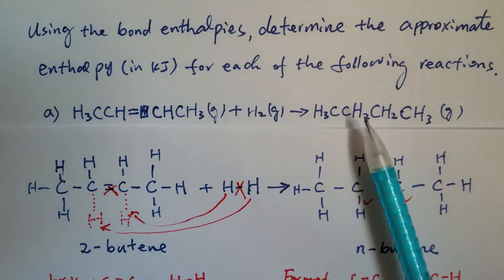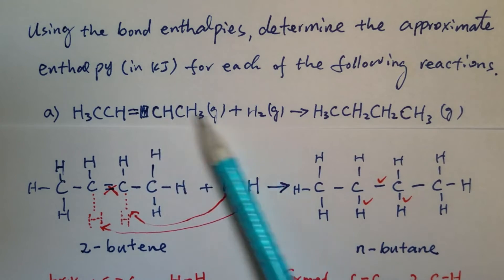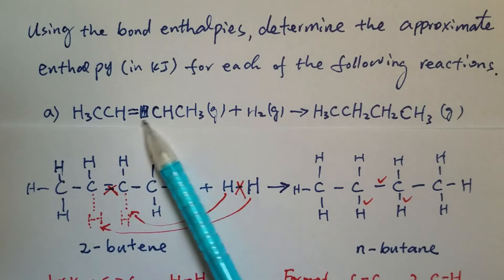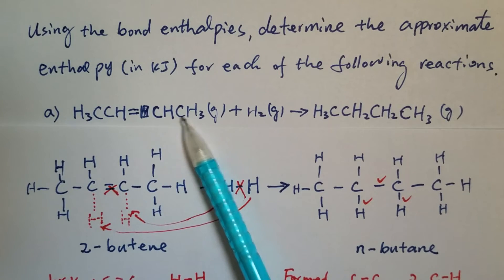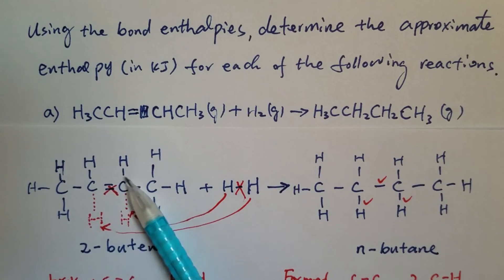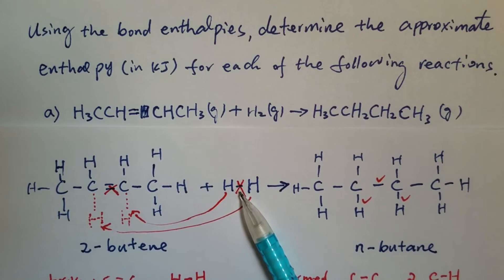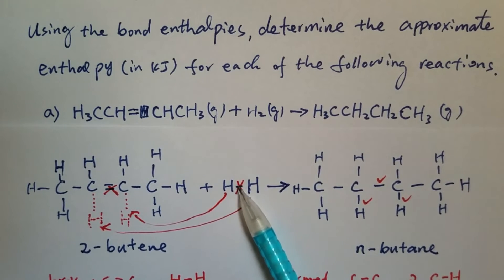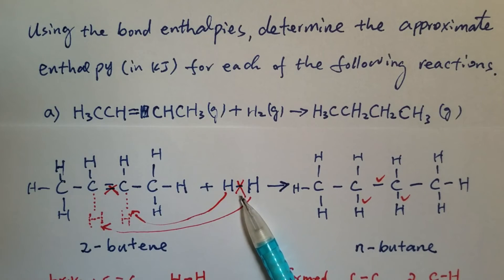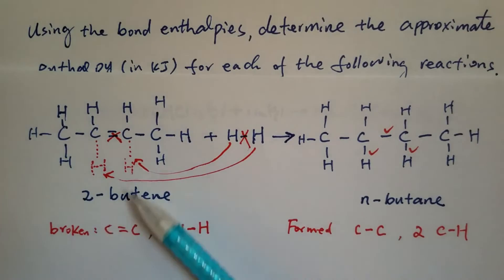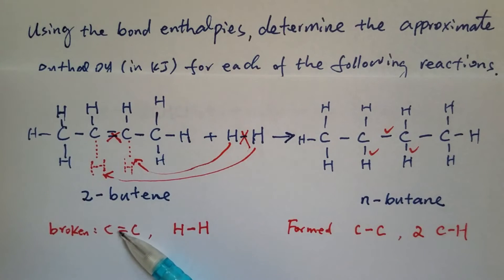In this particular reaction, not all bonds are broken. Let's take a closer look. In butene, actually only this carbon-carbon double bond right here - only that one is broken. Nothing else, everything else stays the same. And for hydrogen, this hydrogen-hydrogen single bond is broken. So the bonds broken for the reactants are: one carbon-carbon double bond, one hydrogen-hydrogen single bond.